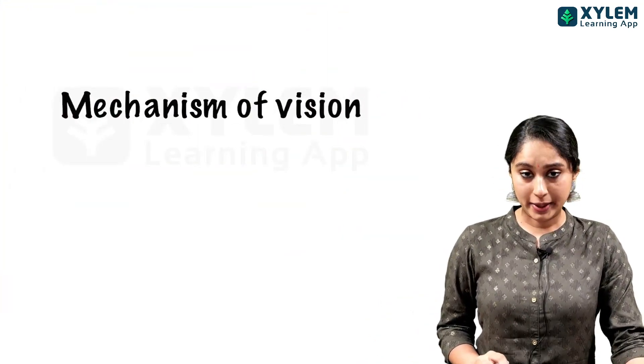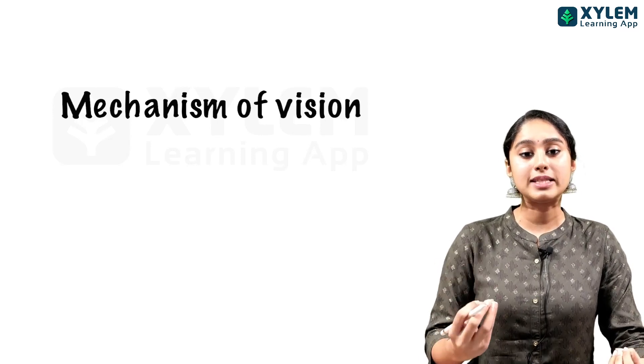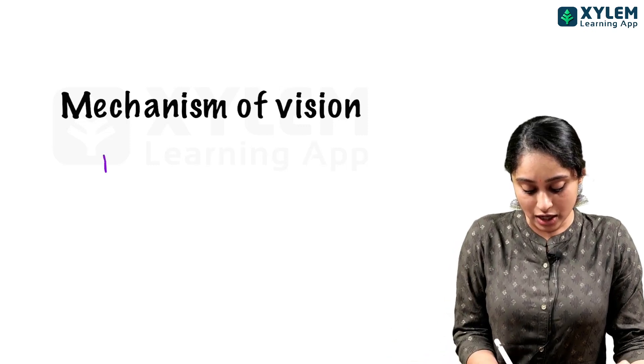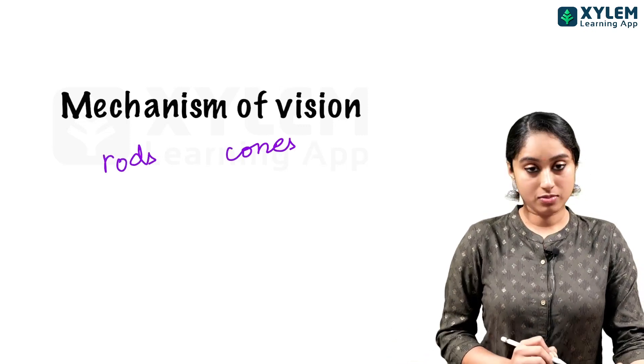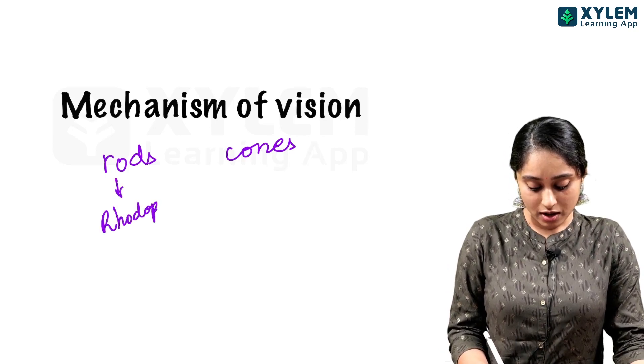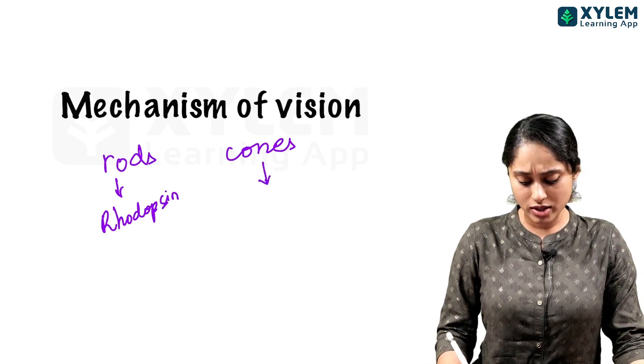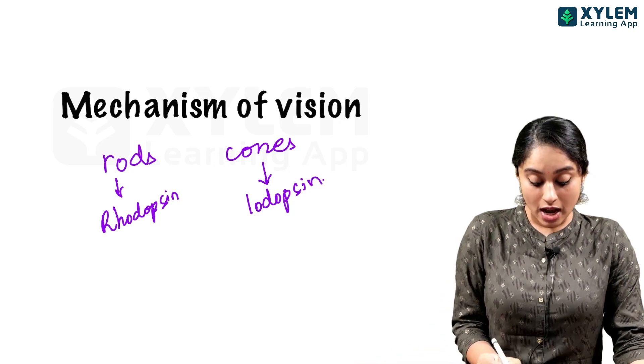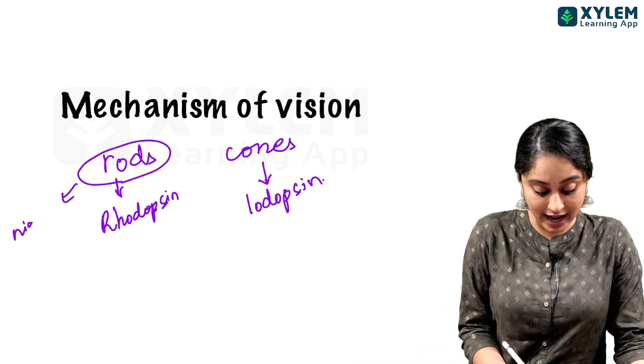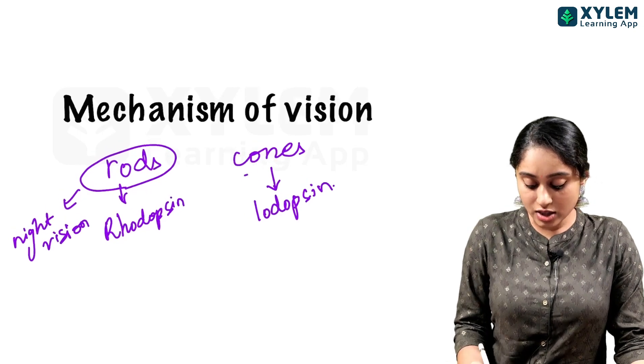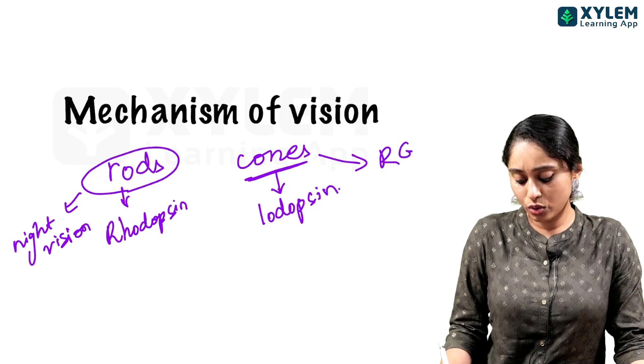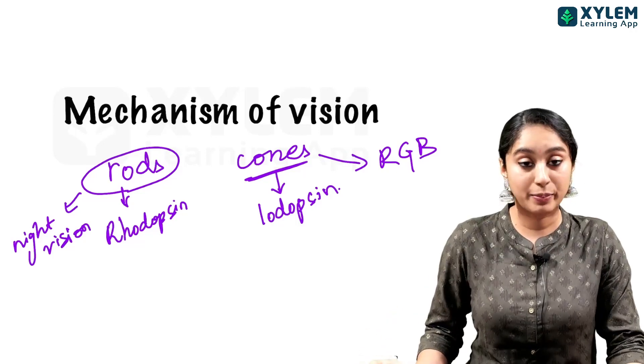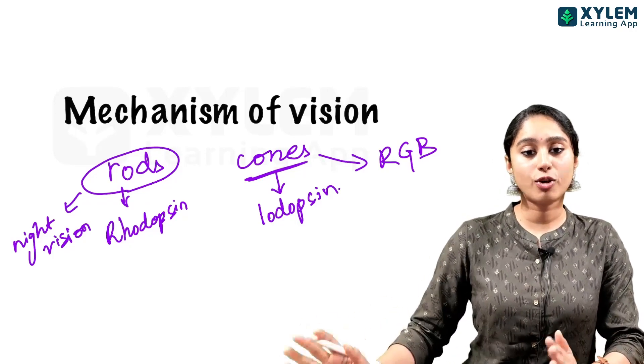Now, the mechanism of vision involves the photopigments. In the photopigments, the light is absorbed by the brain. So photopigments are of two types, mainly rods and cones. In the rods, the rods help in night vision. Whereas in the cones, the red, blue, green main colors combinations give us colored vision to help. So rods for night vision and cones for colored vision.